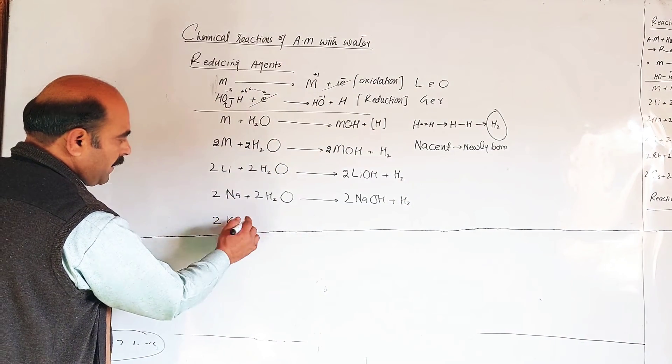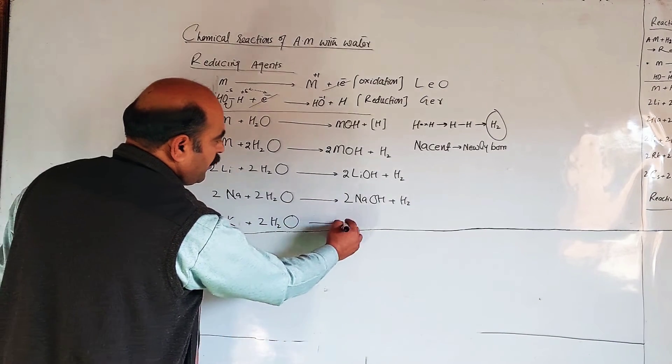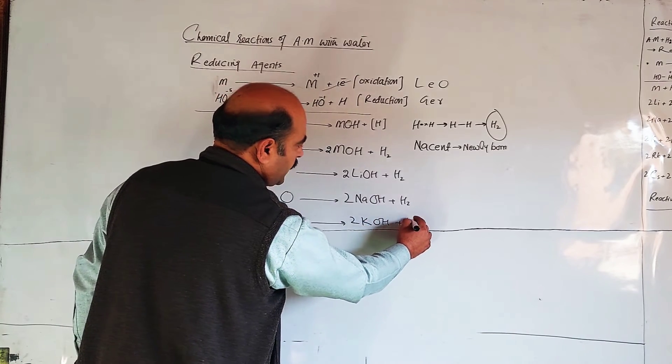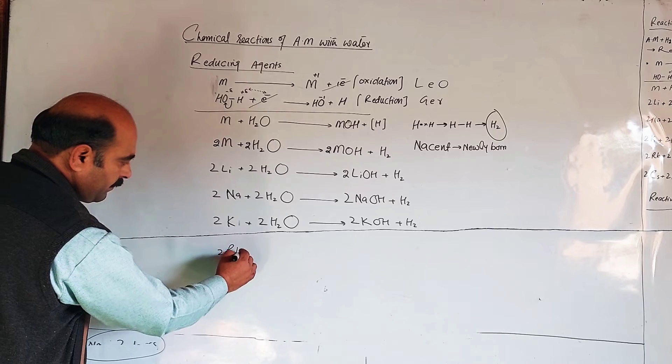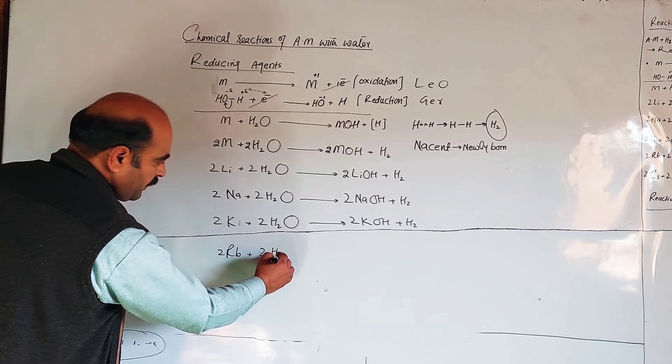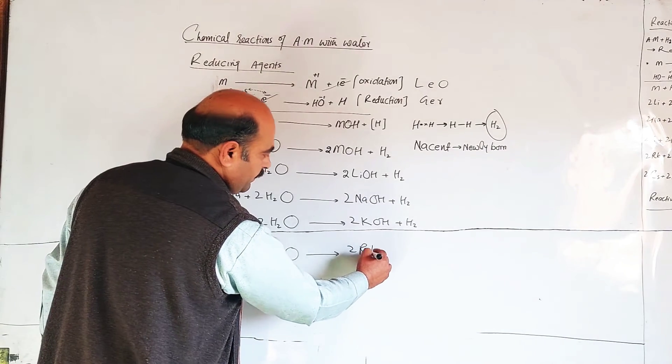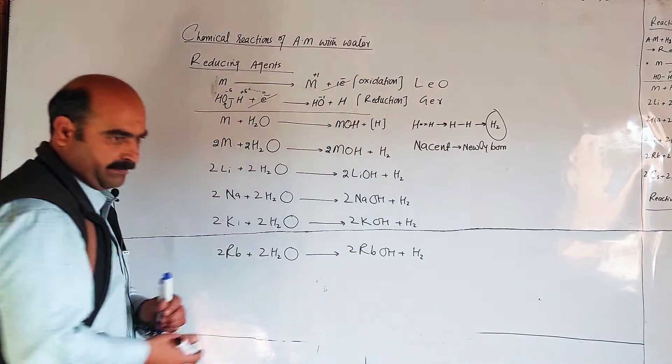Potassium plus water, balanced with two moles, forms potassium hydroxide plus hydrogen. Rubidium plus water forms rubidium hydroxide plus hydrogen, and so on.